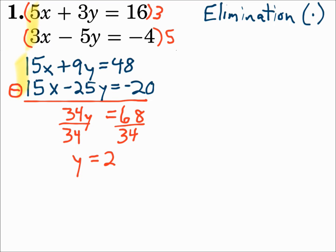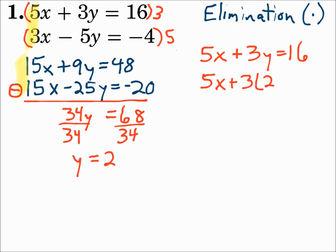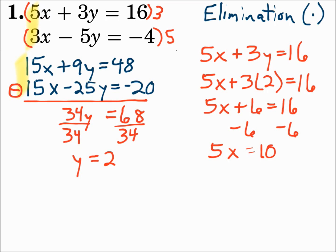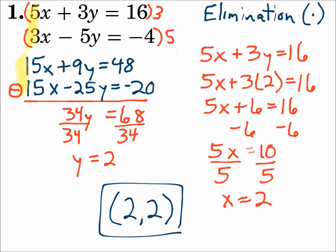Now substitute 2 in for y in the first original equation. Solve for x: 3 times 2 is 6. Subtract 6 from each side, divide both sides by 5, and x is 2. So your final answer is (2, 2). We used elimination by multiplication because we wanted an exact answer, none of the variables had a coefficient of 1 so we couldn't substitute, and none of the variables had matching coefficients so we had to eliminate with multiplication.